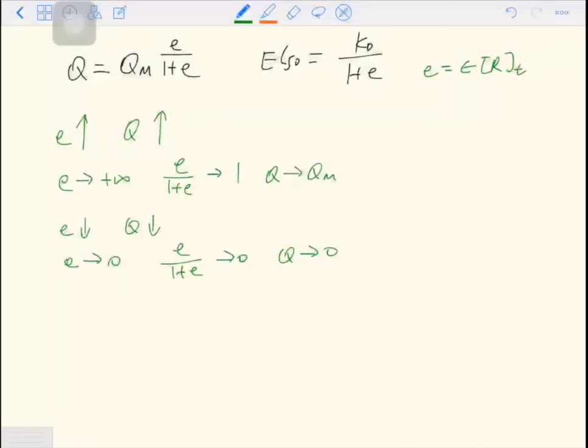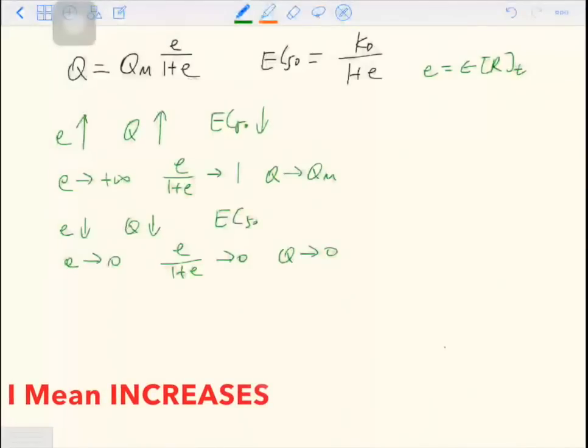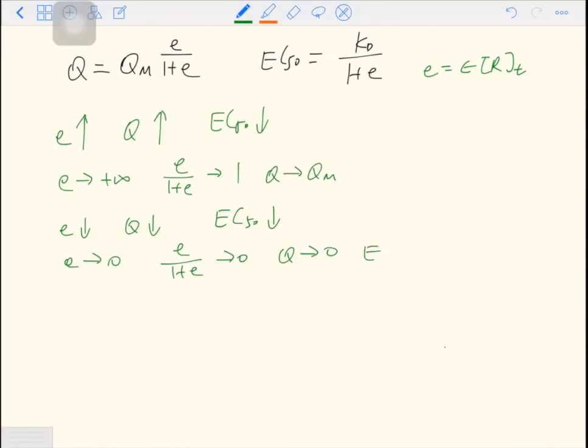When E increases, EC50 decreases. That makes sense because a higher efficacy leads to a lower EC50. Vice versa, when E decreases, EC50 decreases. When E approaches 0, EC50 approaches Kd.